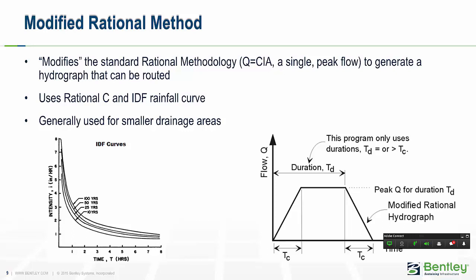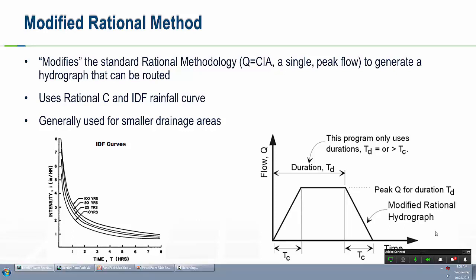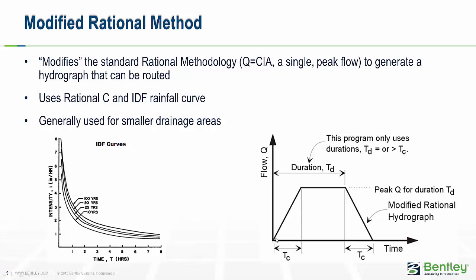The modified rational method attempts to create a runoff hydrograph while still using standard rational method principles. The graph shows how the hydrograph is constructed: the rising limb takes a duration equal to the TC to rise to the peak flow; how long that peak lasts is called the critical storm duration TD; and then the trailing limb back down to zero flow is also equal to the time of concentration. The program computes Q = CIA using the critical storm duration rather than the TC to determine the peak.